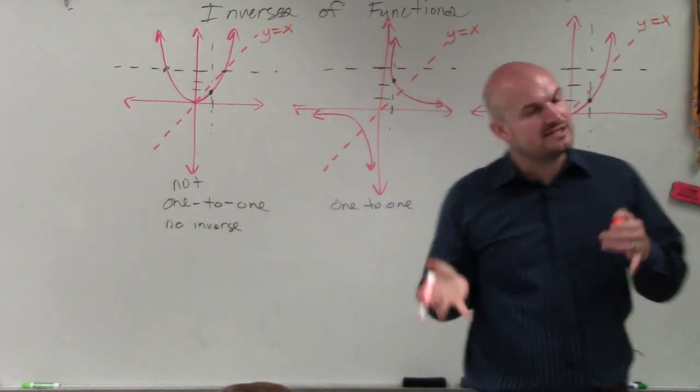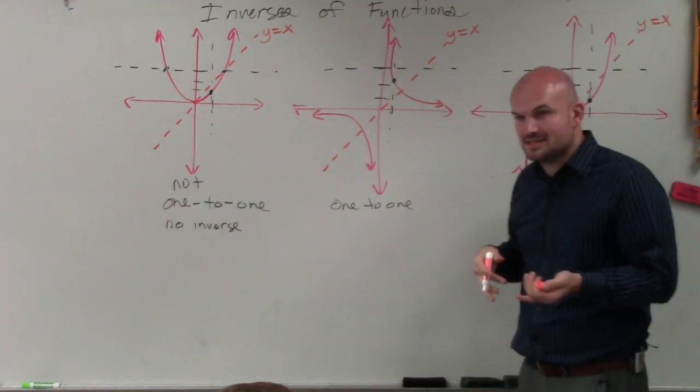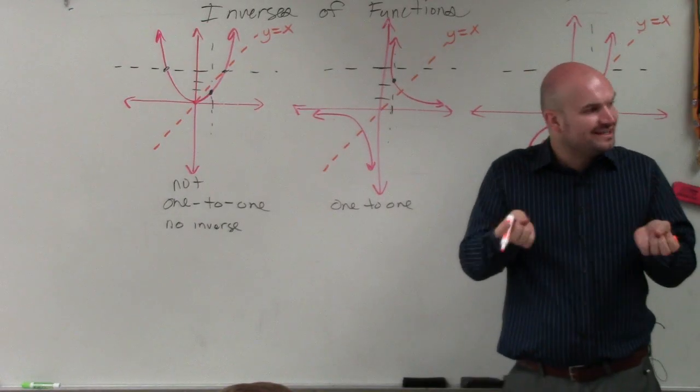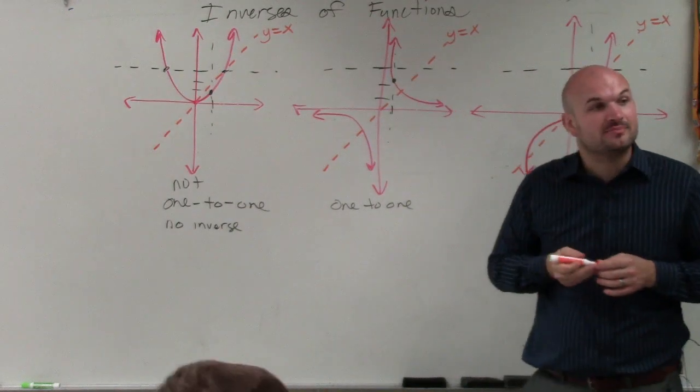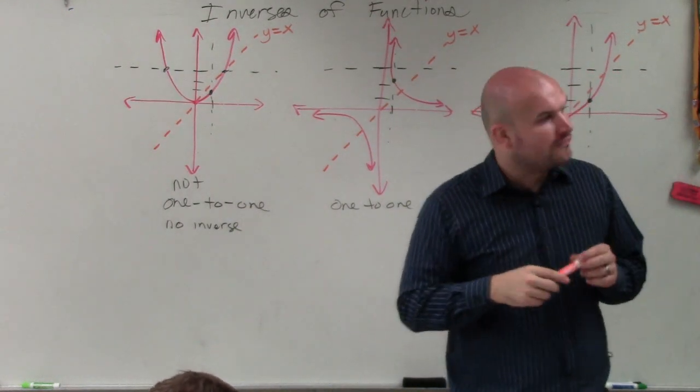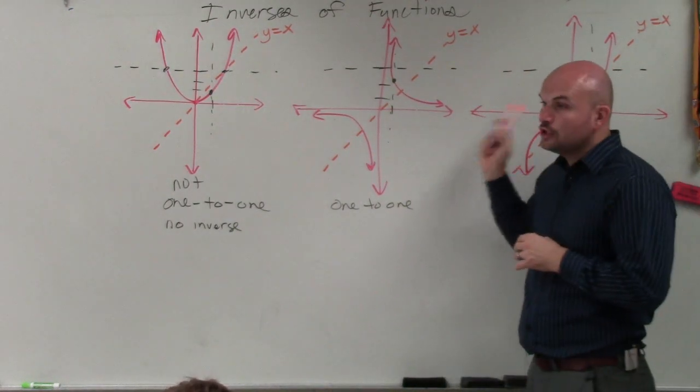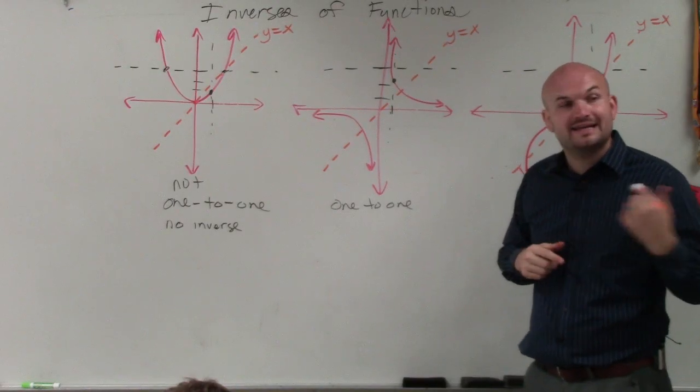So when you reflect a graph about the y equals x line, you produce the inverse graph. OK? So you might want to write that down, I'm not going to write it down on this, but by reflecting over the y equals x line, you produce the inverse function.